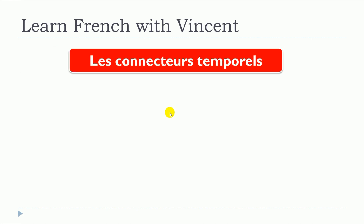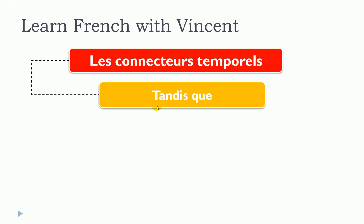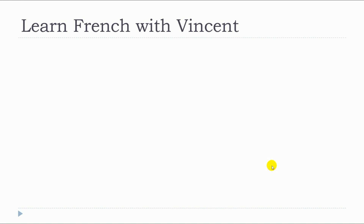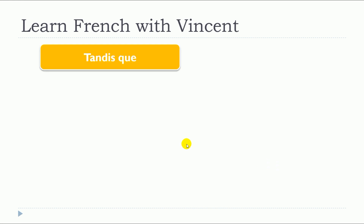So this lesson is about tandis que. The temporal connector tandis que is translated to "while" or "as" in English. So we will see some examples with tandis que.